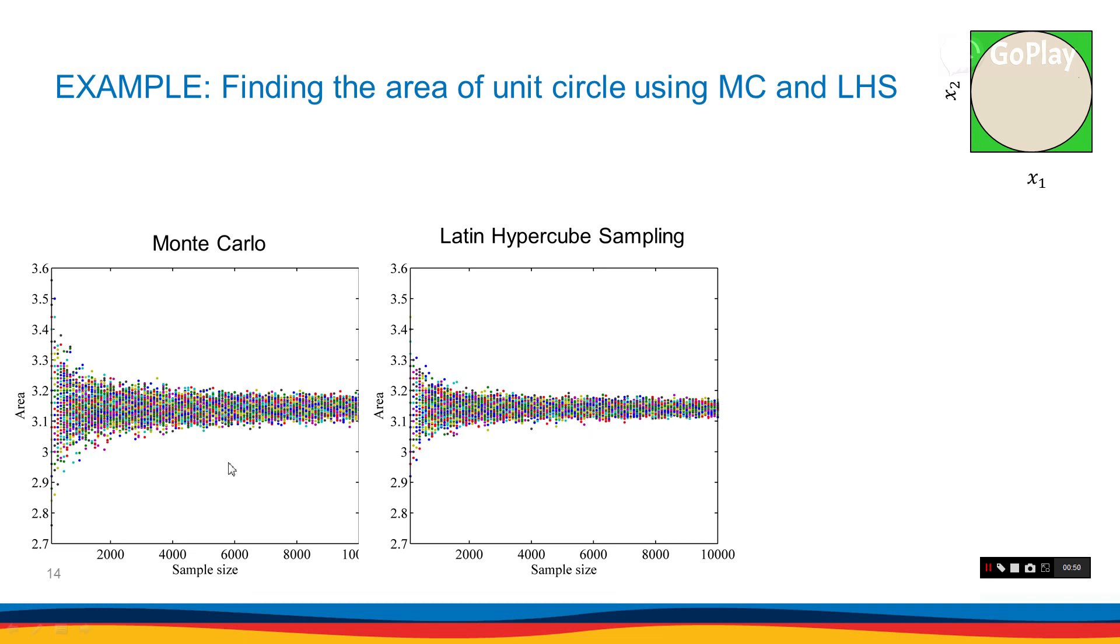So if you compare the result for Monte Carlo with the result for Latin hypercube sampling, it's obvious that the range here is smaller.